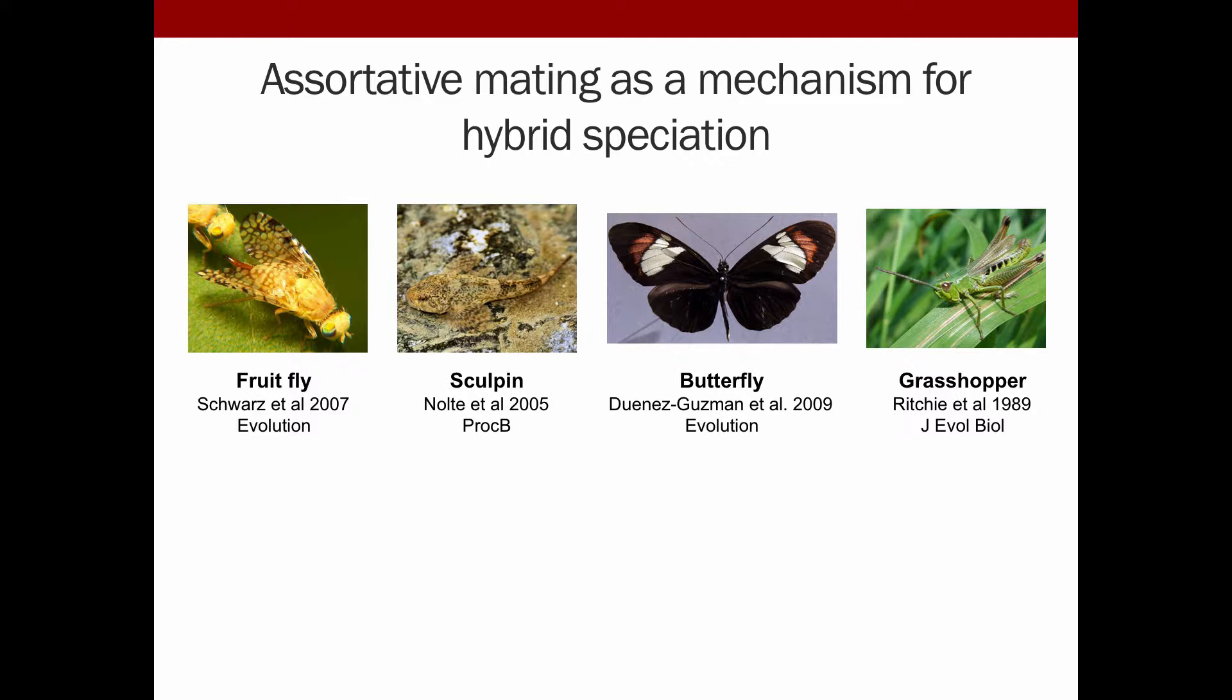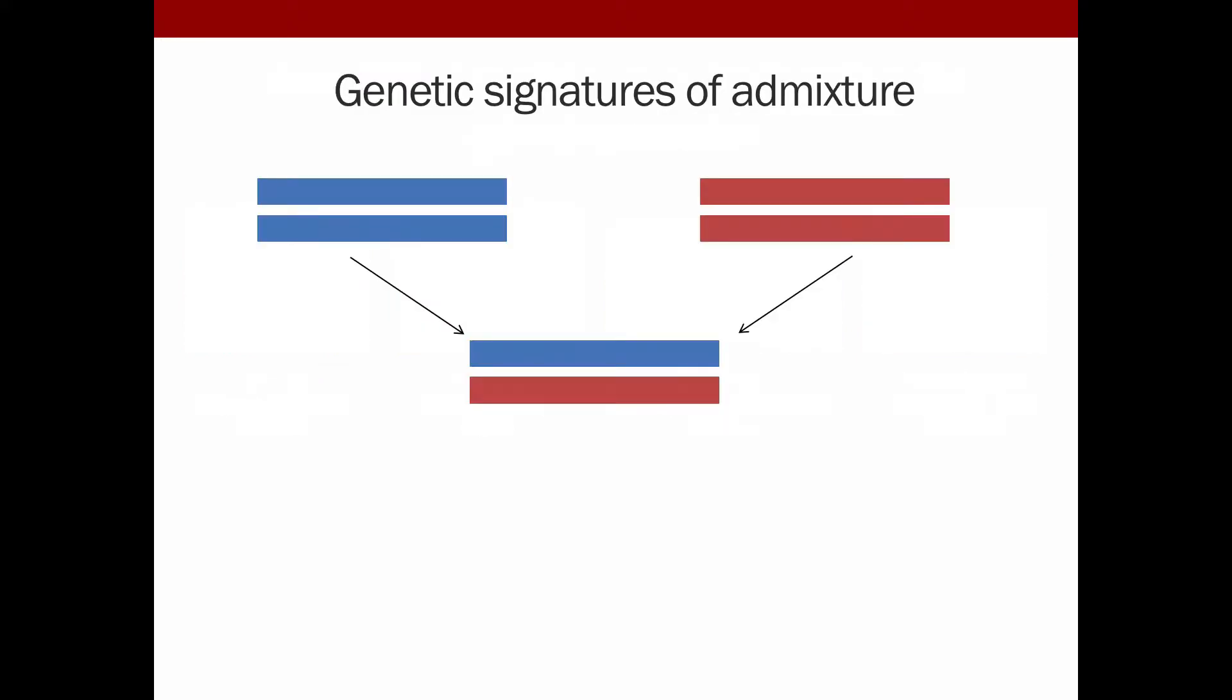We're going to study this by looking at genetic signatures of admixture and how they vary with assortative mating versus random mating. And what I mean by genetic signatures of admixture is this.